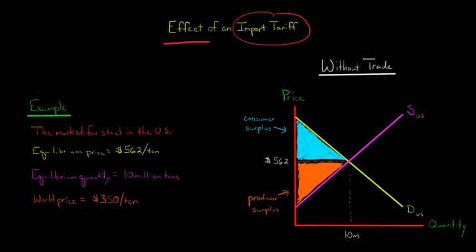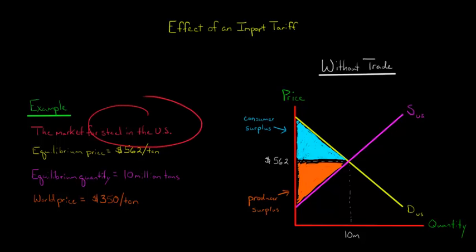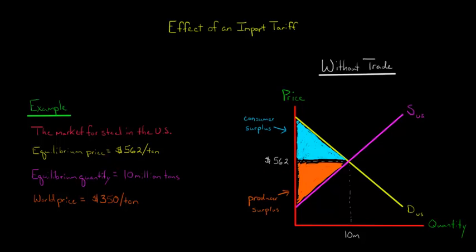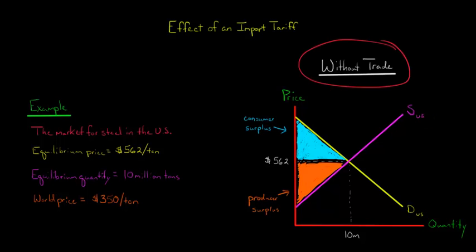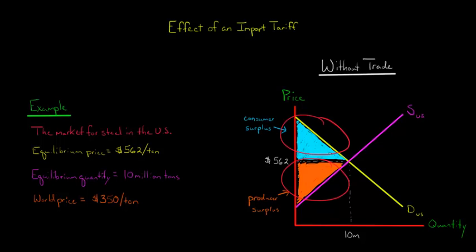In this video, we're going to discuss the effect of an import tariff on a country's total surplus, and I'm going to show you with a graph how it leads to a deadweight loss. So let's take the market for steel production in the United States. The equilibrium price of steel is $562 a ton, and the equilibrium quantity is 10 million tons — looking at supply and demand in the US without any international trade or tariffs. Now we've got our consumer surplus and our producer surplus.